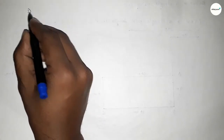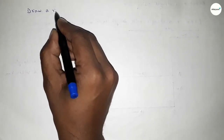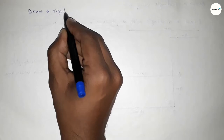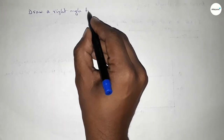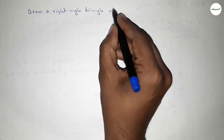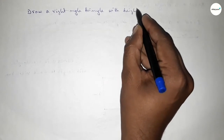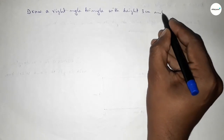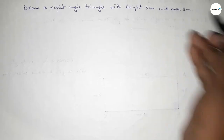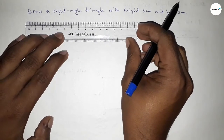Hi everyone, welcome to SI Share Classes. Today in this video we have to draw a right angle triangle with height 3 centimeter and base 5 centimeter. So let's start constructing a right angle triangle.